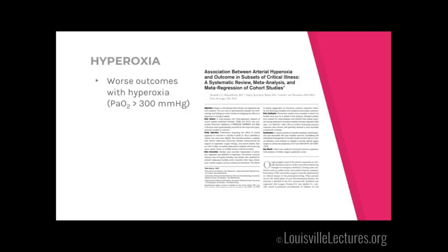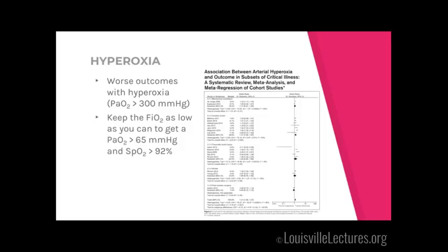Hyperoxia: there isn't a lot of good data for this. The largest meta-analysis found — 18 studies included, excluding sepsis and pneumonia patients — showed better outcomes and lower mortality with less oxygen exposure. Hyperoxia is defined as a PaO2 greater than 300 mmHg. The evidence for harm isn't very strong, but try to keep your patient on the lowest FiO2 that maintains SpO2 barely above 92% and PaO2 above 65 mmHg. More literature is likely coming.